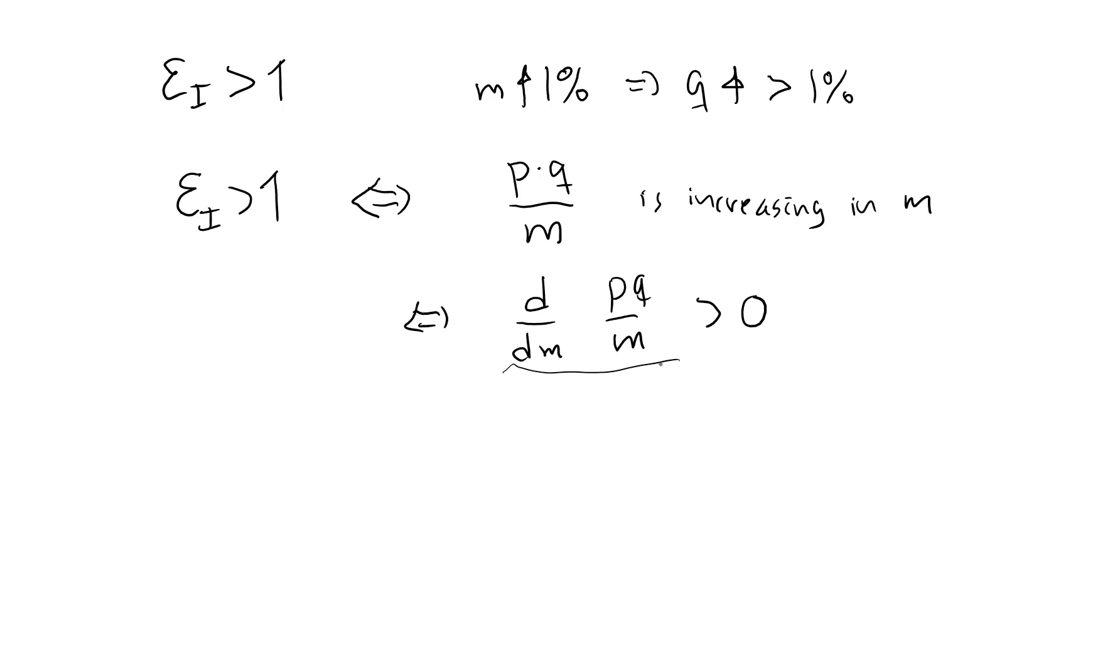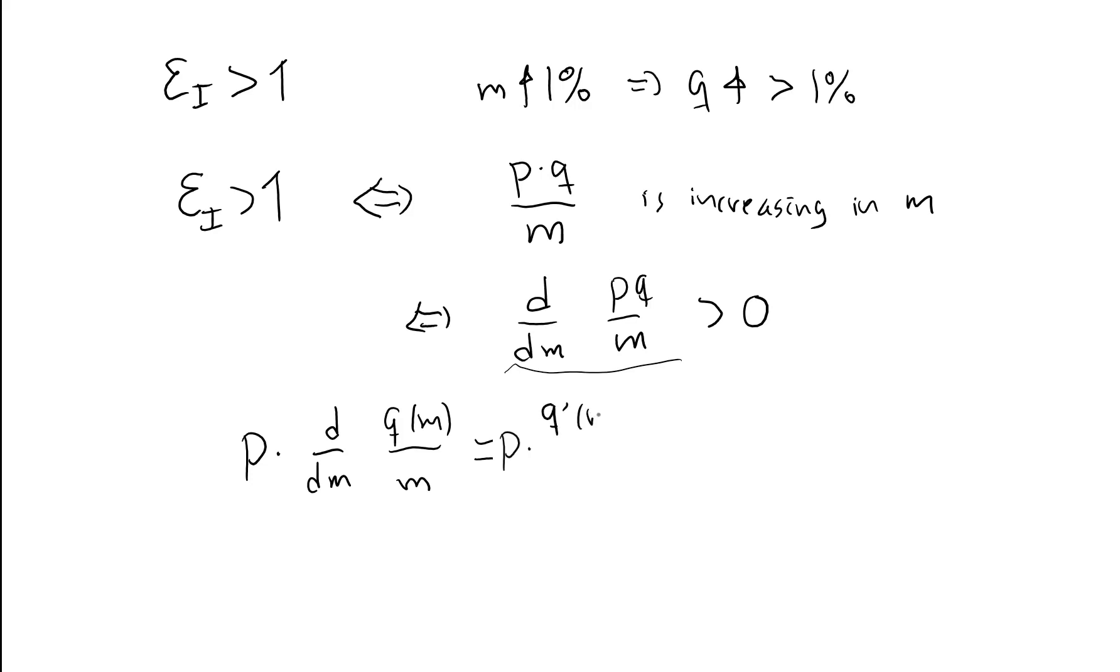So if I want to do this derivative here, I can take p outside, that's just a constant now. Then I need to differentiate this ratio with respect to m, remembering that q is indeed a function of m. To do that, I use the ratio rule for derivatives. That says that first you do the derivative of the numerator, q prime m, you do m as it is, then you do a minus sign, q of m as it is, and the derivative of m with respect to m is just 1, divided by m squared.